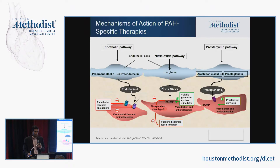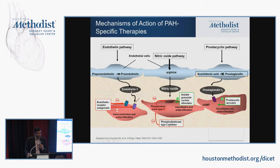The disease-specific pathways for which drugs have been approved are the endothelin pathway, the nitric oxide pathway, and the prostacyclin pathway. Endothelin-1 acts on both smooth muscle and endothelial cells to increase proliferation and vasoconstriction. Depletion of nitric oxide leads to vasoconstriction, which is a hallmark of the disease. Similarly, deficiency of prostaglandins leads to vasoconstriction and proliferation.